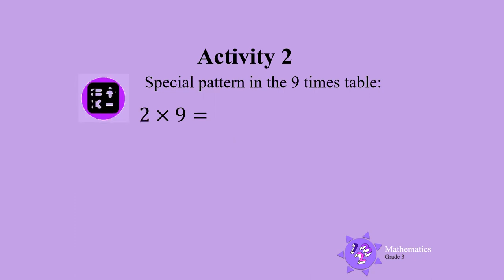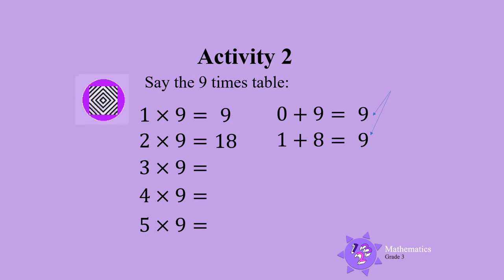Let's do the same thing with 2 times 9. 2 times 9 is 18. Let's add the tens and ones in the answer. There is 1 ten and 8 ones, so 1 plus 8 is 9. What do you notice about the answers you get when you add the digits? Do you see that the answer is always 9?